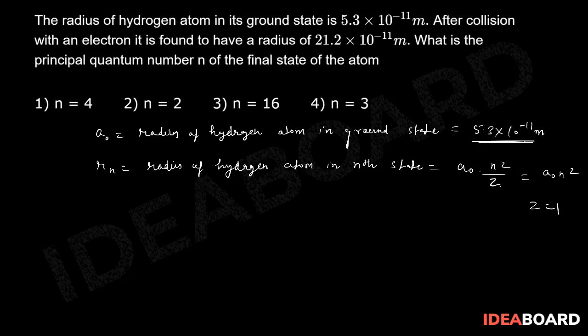If z is equal to 1 for hydrogen atom, it can be written as a₀ × n² itself, which is equal to 21.2 × 10⁻¹¹ meters. So n² can be written as 21.2 × 10⁻¹¹ divided by a₀.